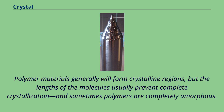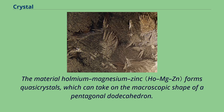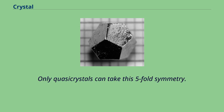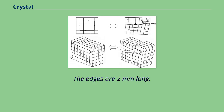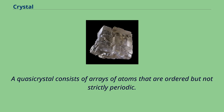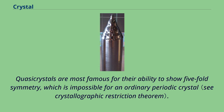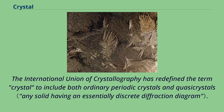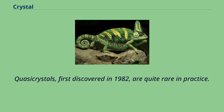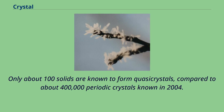The material holmium-magnesium-zinc forms quasicrystals, which can take on the macroscopic shape of a pentagonal dodecahedron — only quasicrystals can take this five-fold symmetry, with edges two millimeters long. A quasicrystal consists of arrays of atoms that are ordered but not strictly periodic. They have many attributes in common with ordinary crystals, such as displaying a discrete pattern in x-ray diffraction and the ability to form shapes with smooth, flat faces. Quasicrystals are most famous for their ability to show five-fold symmetry, which is impossible for an ordinary periodic crystal. The International Union of Crystallography has redefined the term crystal to include both ordinary periodic crystals and quasicrystals. Quasicrystals, first discovered in 1982, are quite rare — only about 100 solids are known to form quasicrystals, compared to about 400,000 periodic crystals known in 2004. The 2011 Nobel Prize in Chemistry was awarded to Dan Shechtman for the discovery of quasicrystals.